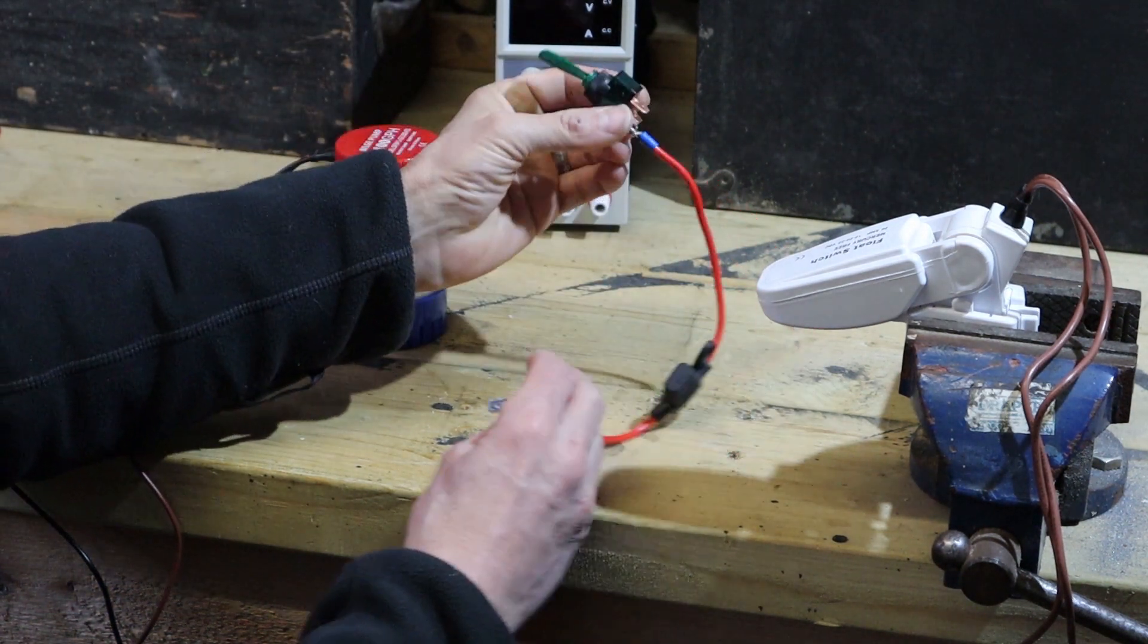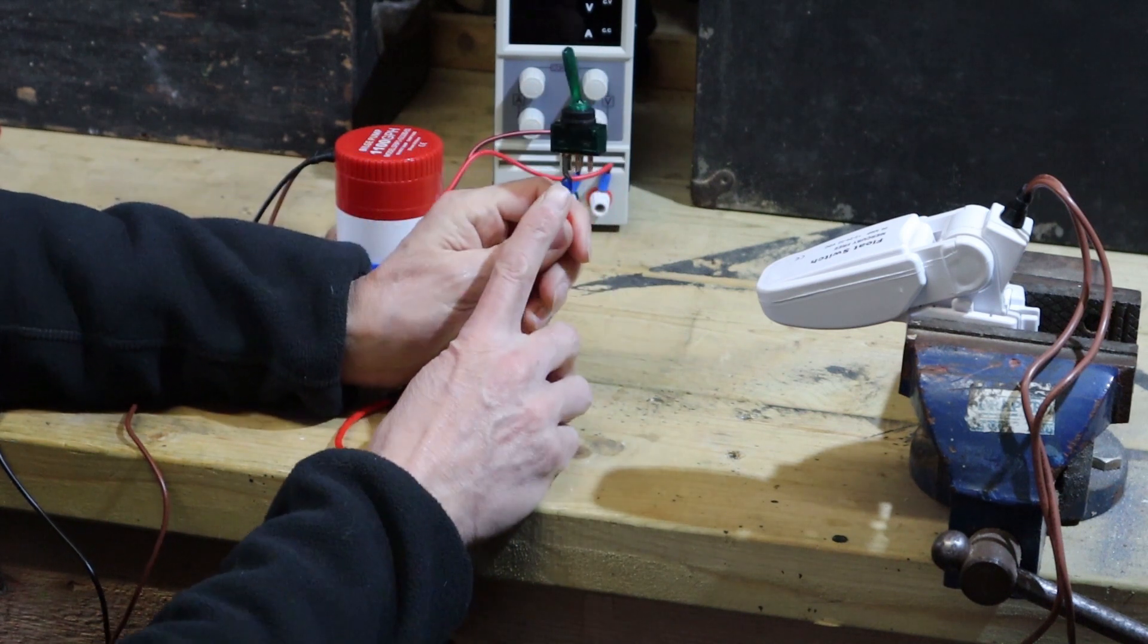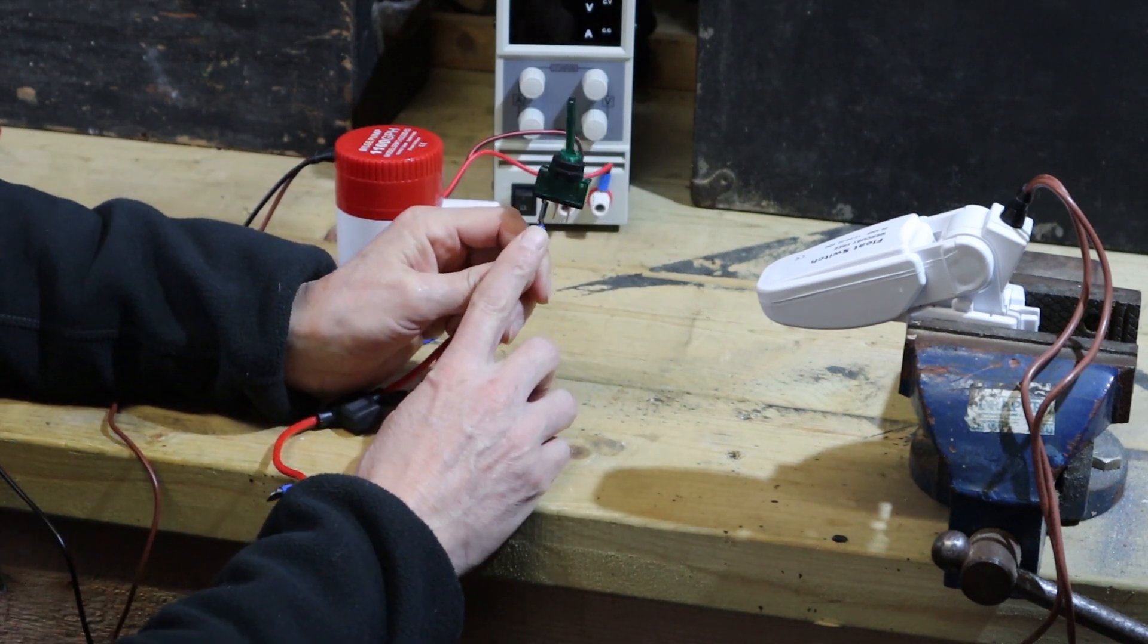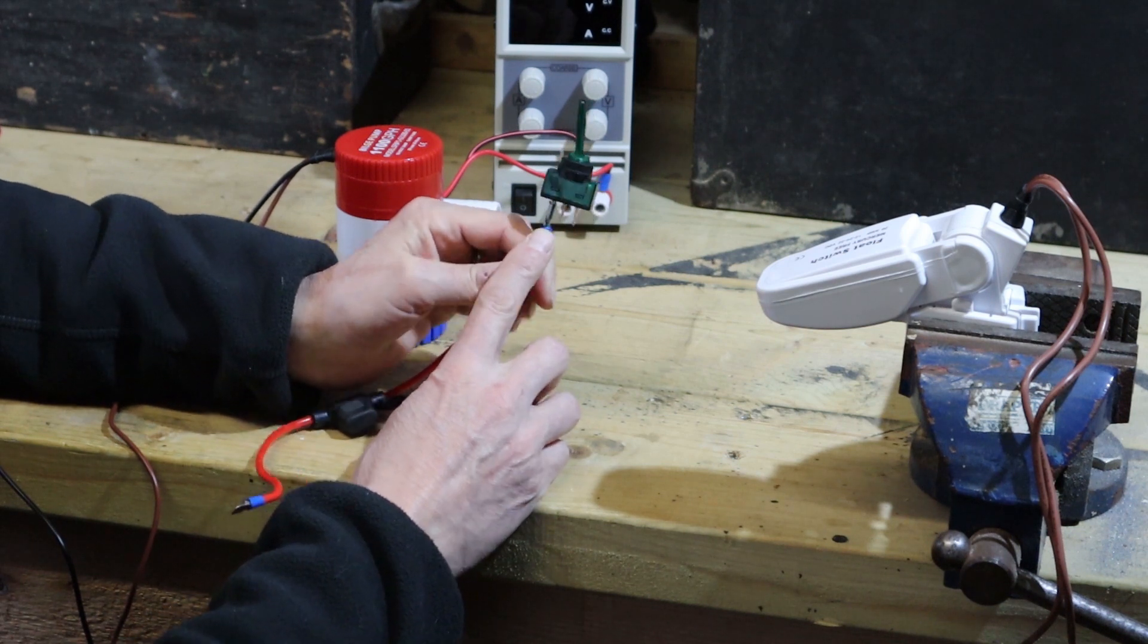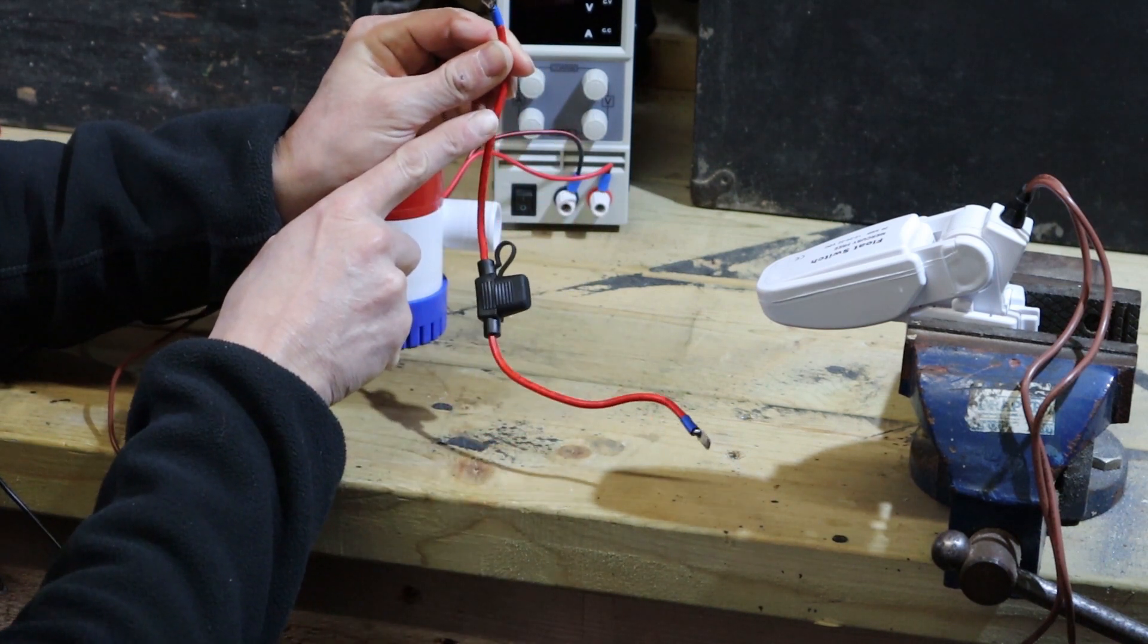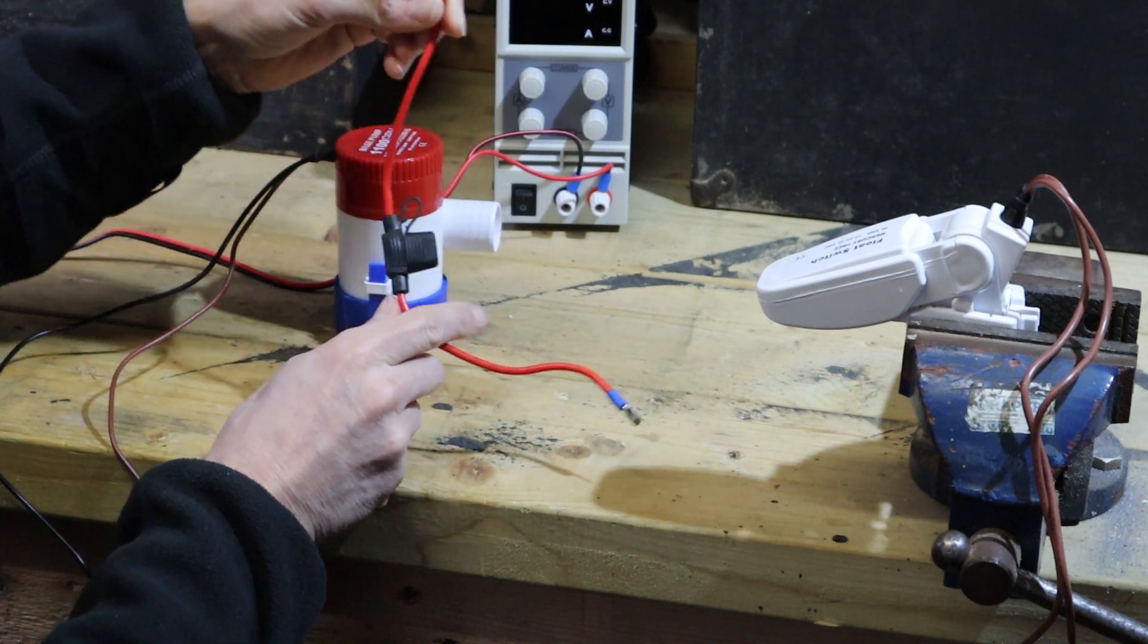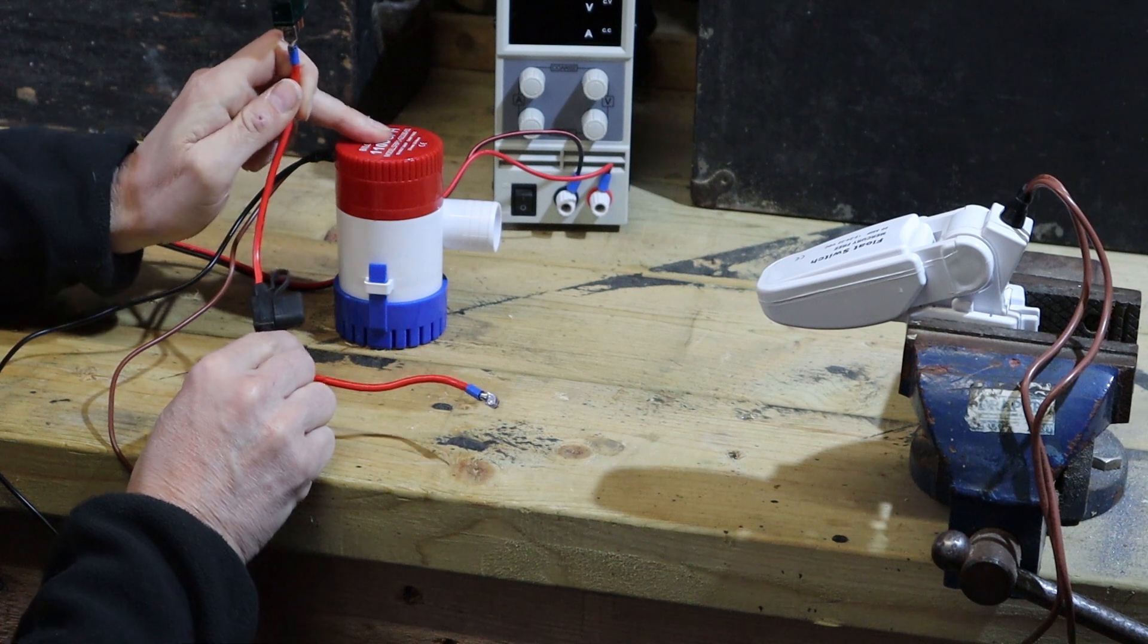We also have a toggle switch which would be inside the boat, and which would be your control over turning on or off the electrics to the bilge pump. That is connected to an inline fuse. So in here we've got a 5 amp fuse which matches what's specified for the bilge pump.